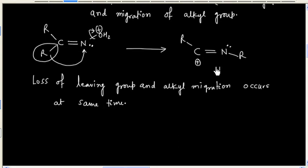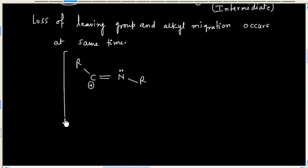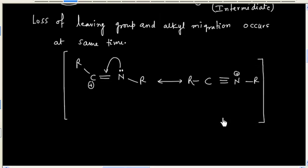So this is the intermediate. This intermediate is resonance stabilized. So we can write another resonating structure for this molecule. In this case we have two resonating structures.